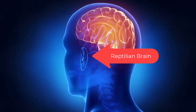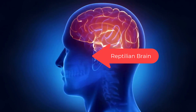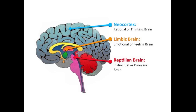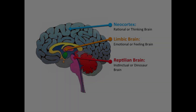The old brain, the reptilian brain, decides. It can take into account input from the other brains, but it can also decide faster than the blink of an eye, then use the other brains to justify the decision. The reptilian brain is visual and hardwired into the brain stem.